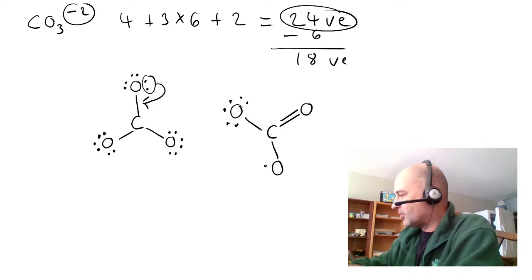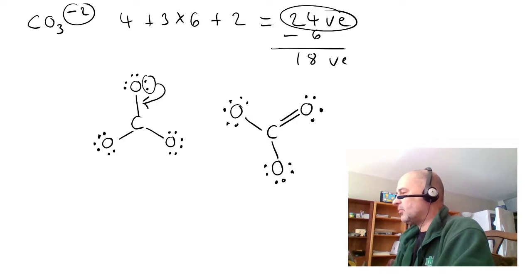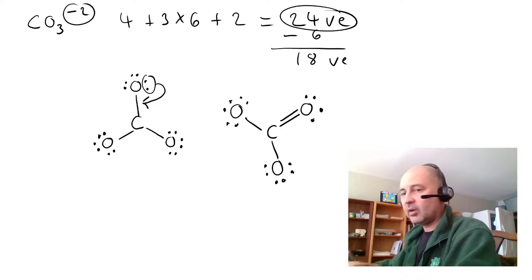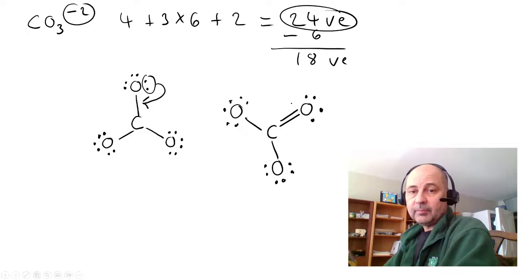So, each oxygen that's singly bonded still has six lone pair electrons. And then, the oxygen with the double bond only has four, because we moved that lone pair to make two electrons. Okay, now we can go to active.